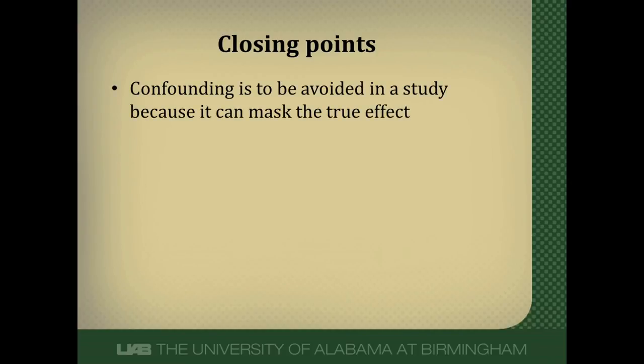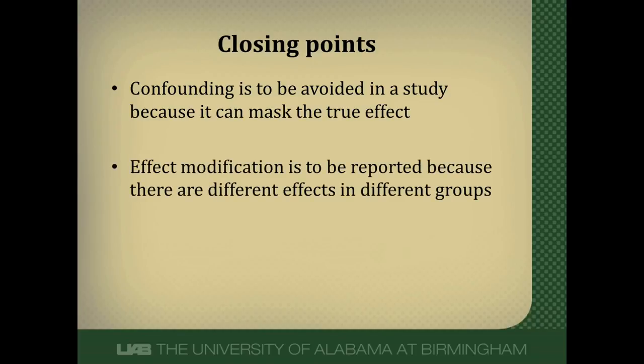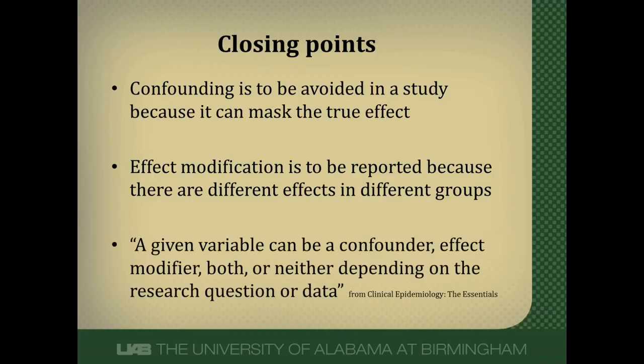In summary, confounding is something we try to avoid in a study because it distorts the true effect of exposure on disease, so we use matching, randomization, or restriction. Effect modification, on the other hand, is something we want to look for, because it can reveal differential effects of an exposure or treatment in certain subgroups. As the Fletchers note in their textbook Clinical Epidemiology: The Essentials, a given variable can be a confounder, an effect modifier, both, or neither — depending on the research question and the data. I hope this video has helped you differentiate effect modification from confounding. If you have any questions, you can contact me through the Contact Me section of my blog. Have a great day.